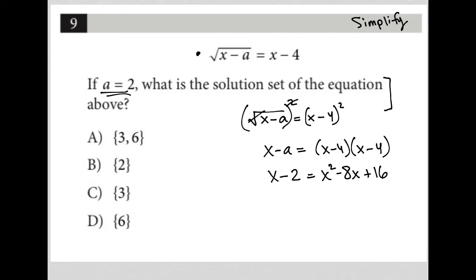I can then combine like terms by subtracting x from both sides of the equation and adding two to both sides of the equation. I'm left with just zero here on the left-hand side, and I have x squared minus 9x plus 18 here on the right-hand side.